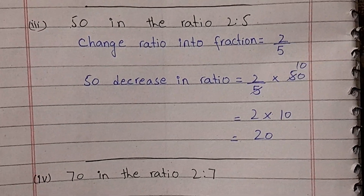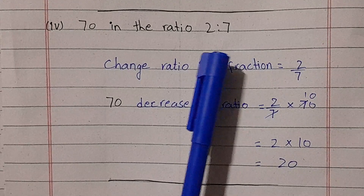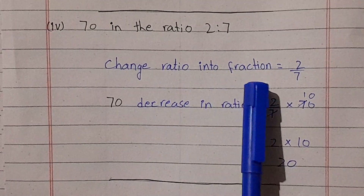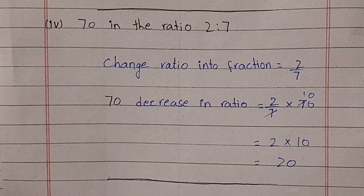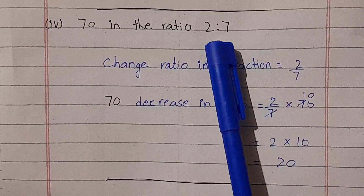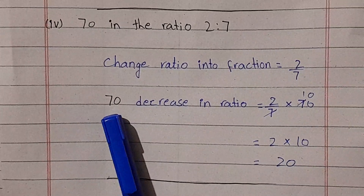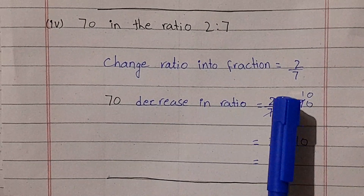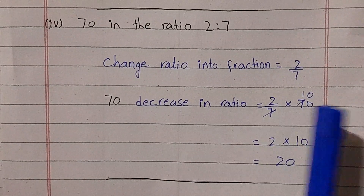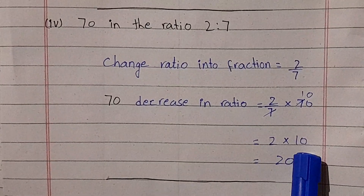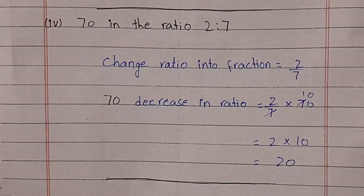Part number 4: decrease 70 in the ratio of 2 to 7. We change the ratio into a fraction: 2 over 7. We multiply 2 over 7 by 70. We divide 70 by 7, which gives 10, and then multiply by 2, giving 20. So, decrease in ratio is 20.